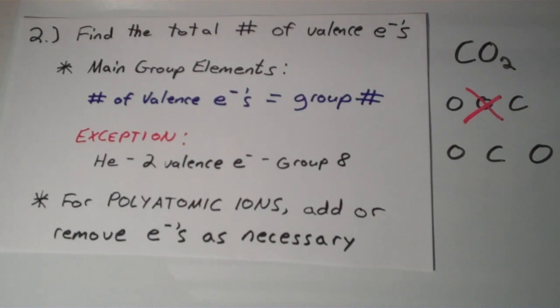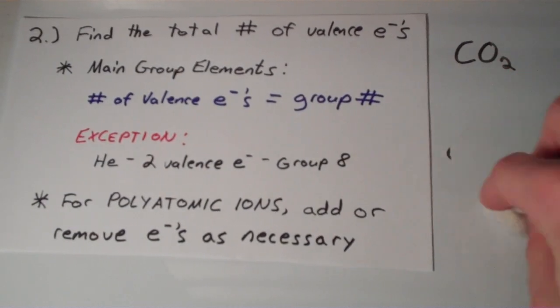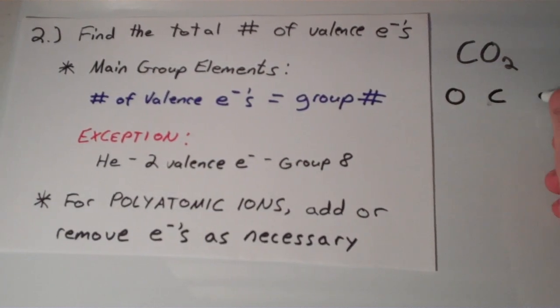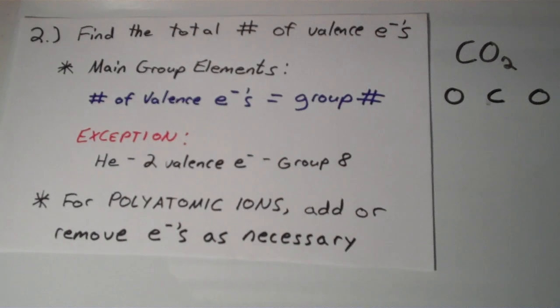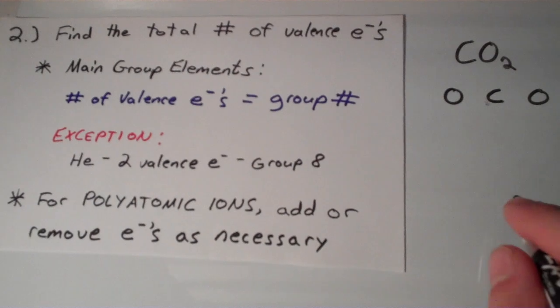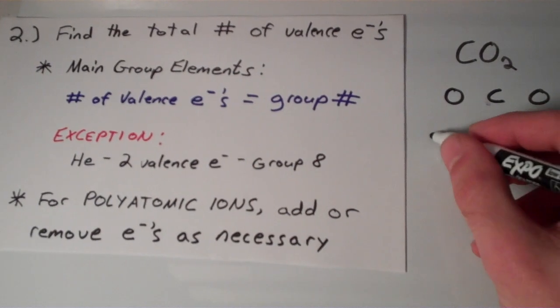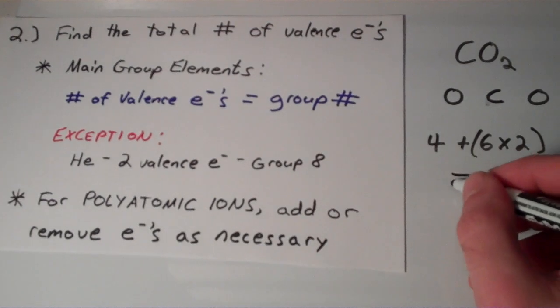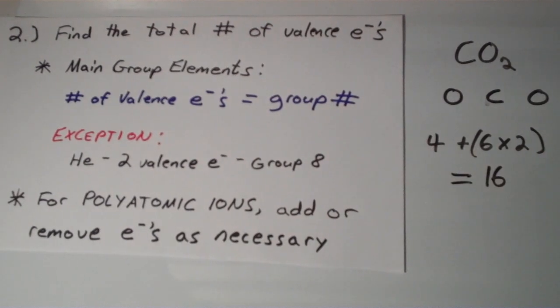Okay, so we can go ahead and find the total number of valence electrons in this thing. So we know that the skeletal structure is going to be OCO. So now let's find out how many valence electrons this total thing has. So there are 2 oxygens and 1 carbon. Carbon has 4 valence electrons, oxygen has 6 valence electrons, and there are 2 of them. So 4 plus the quantity of 6 times 2, that is 16 valence electrons.